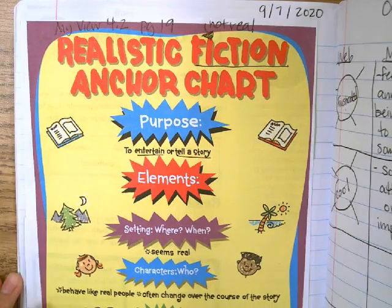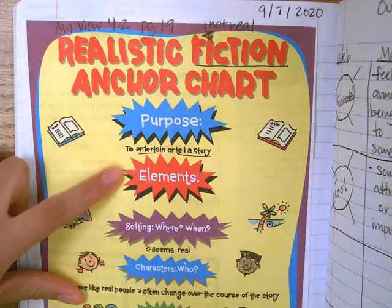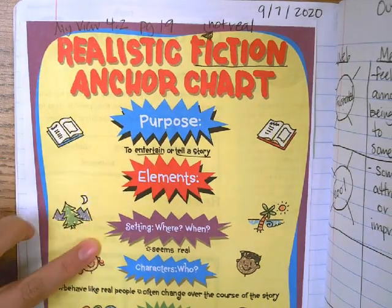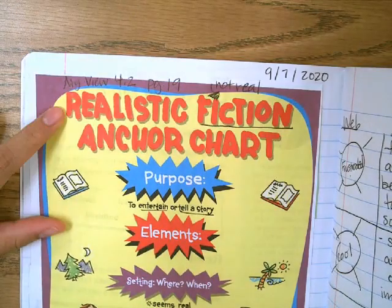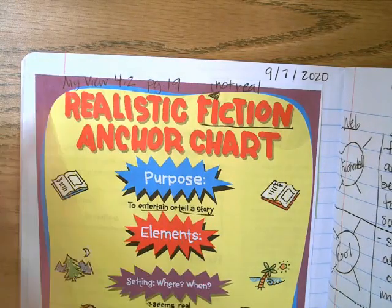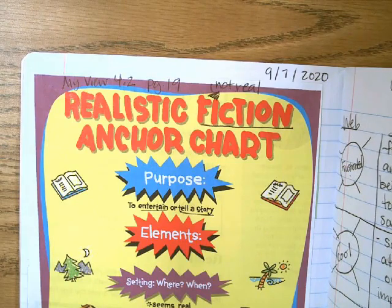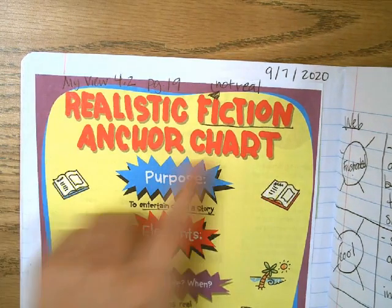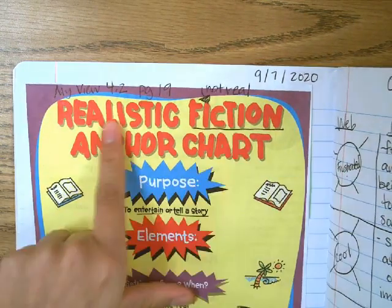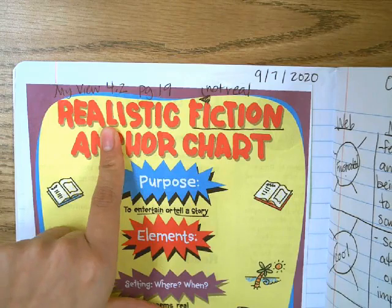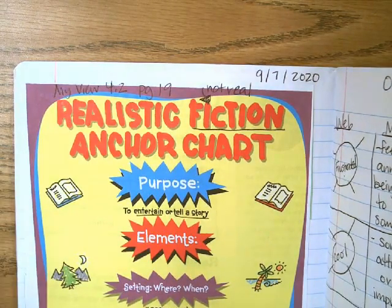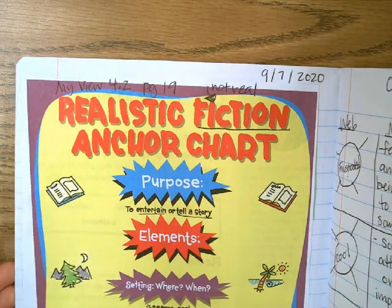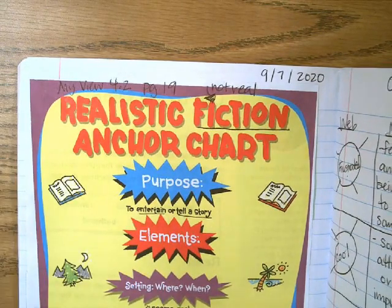So we did go over the purpose, elements, setting, characters, plot, and theme of a realistic fiction. That's the genre of what we're going to be reading this week. Fiction is something that's not real. Realistic is something that is real. So it's a made-up story that could be real. That's what we are going to be going over today.